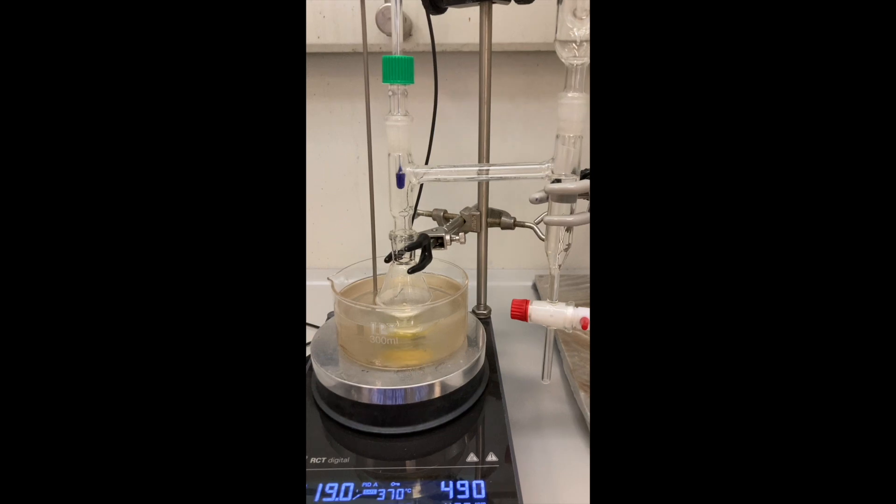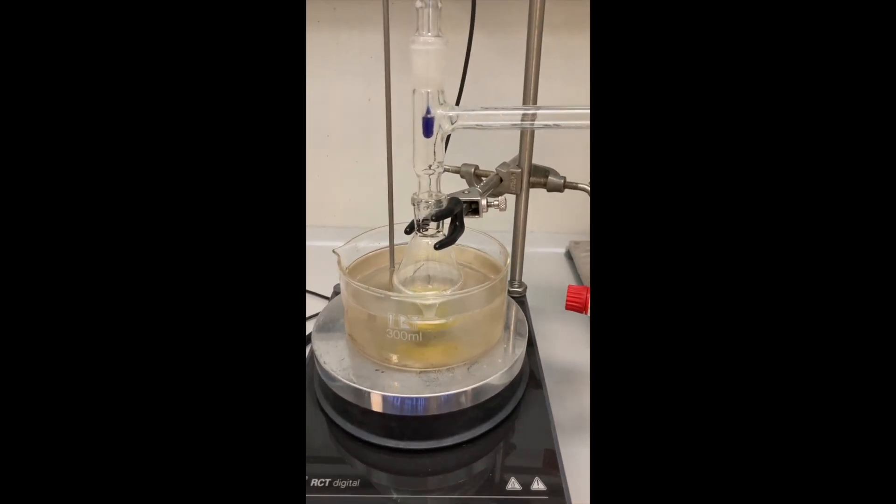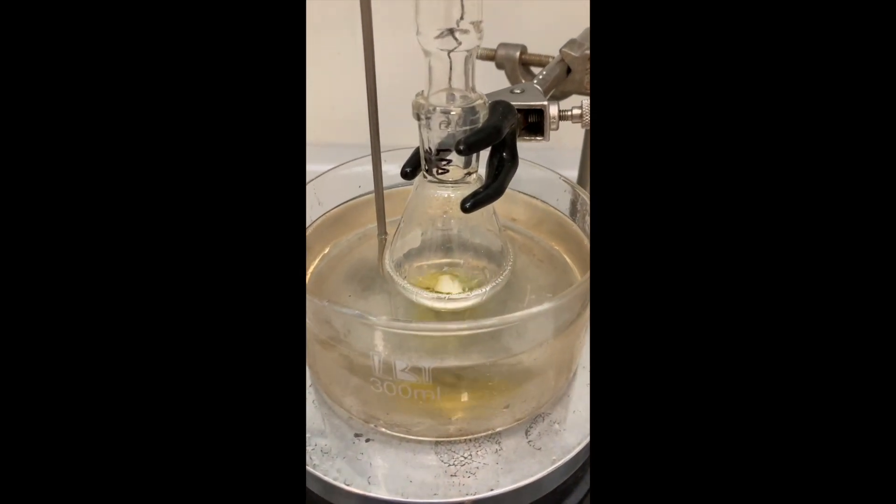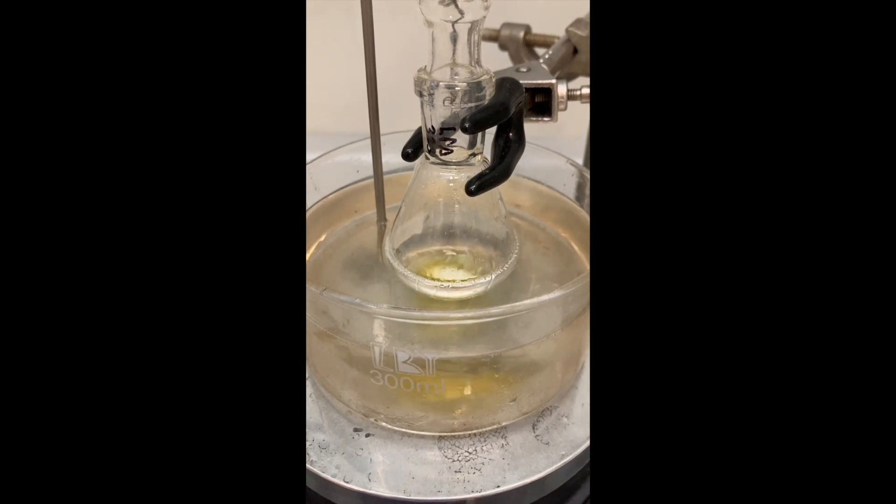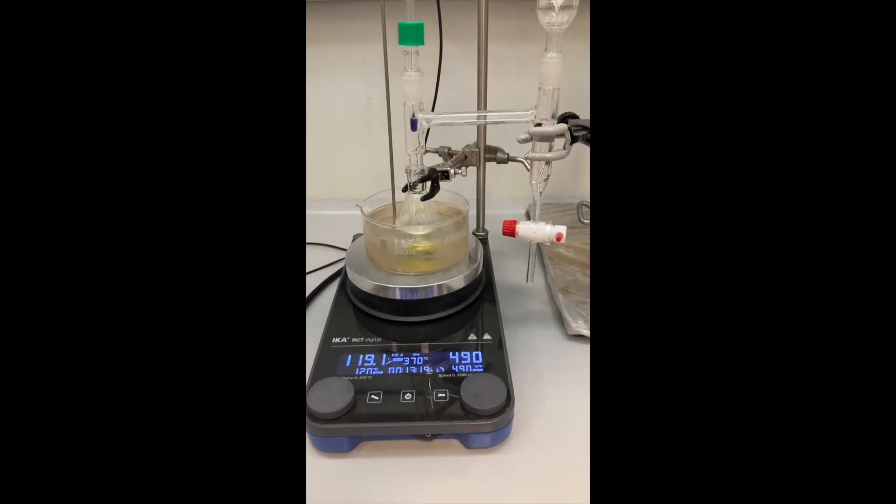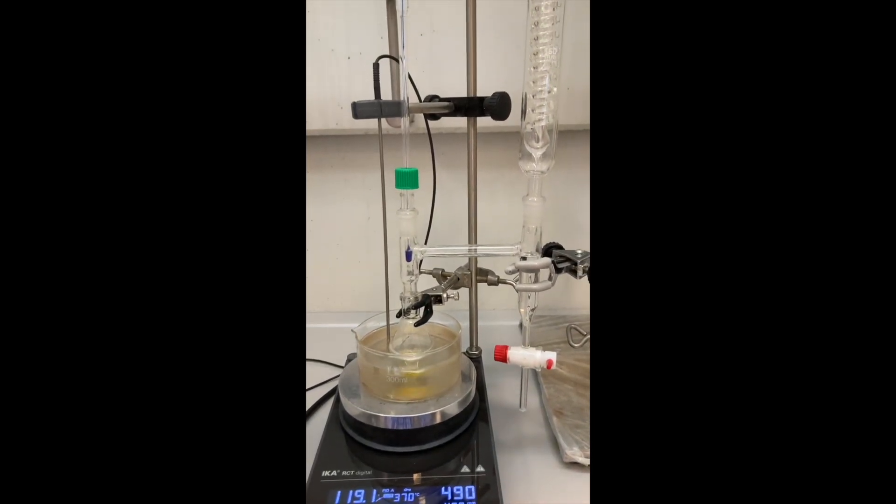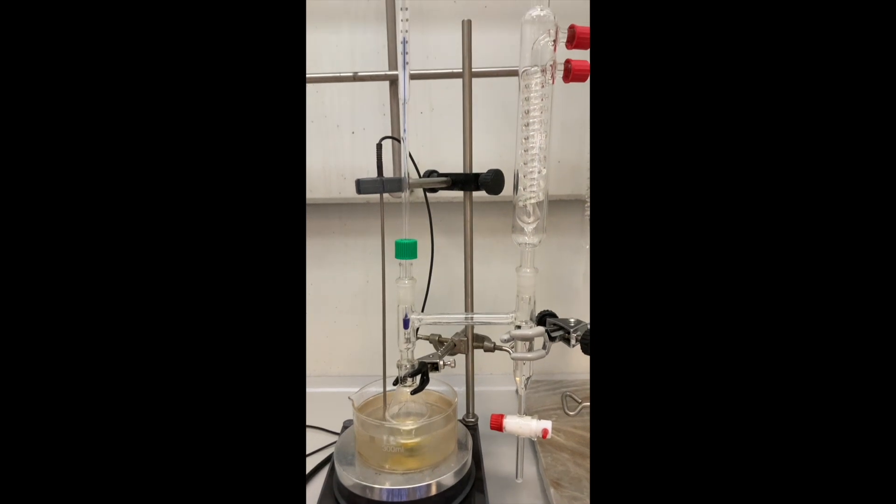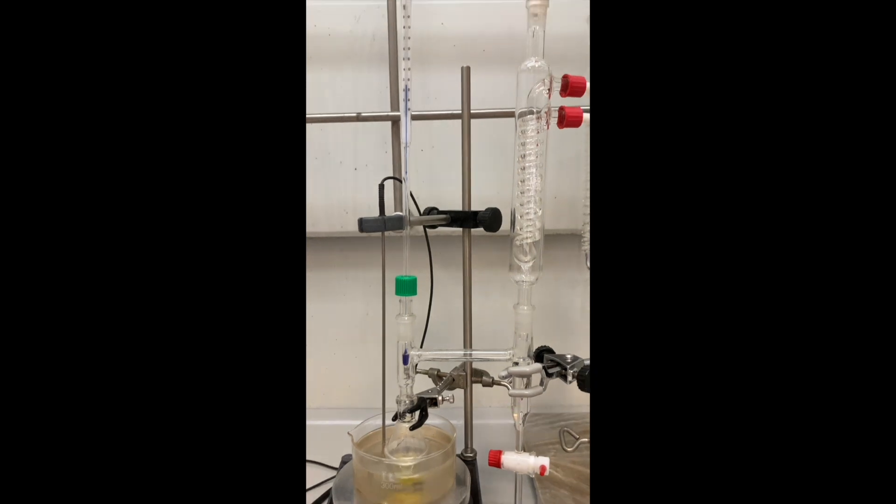Toluene and water are immiscible liquids. However, they combine to make an azeotropic mixture that distills out of the reaction at around 84°C. This vapor travels up into the condenser where it cools down and drips into the distilling trap. Here, the immiscible liquids separate.